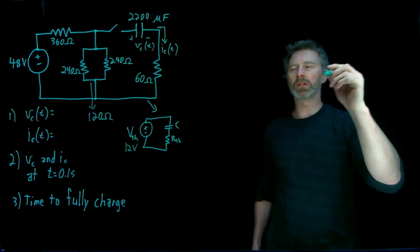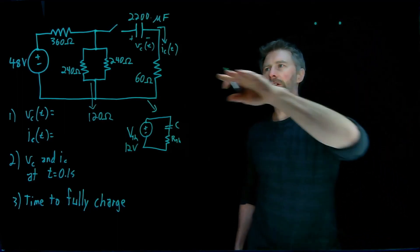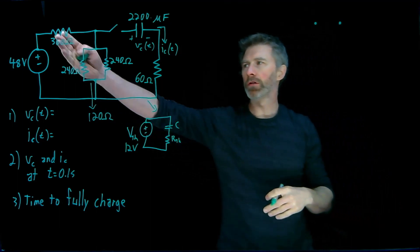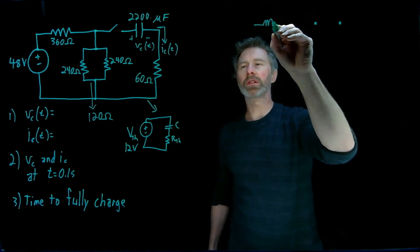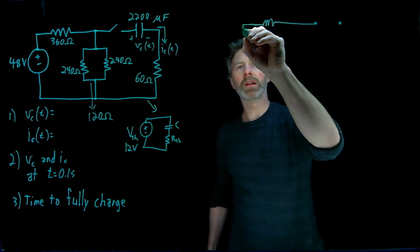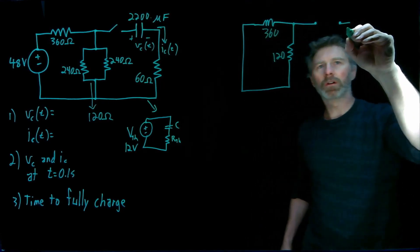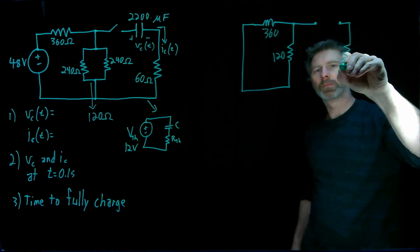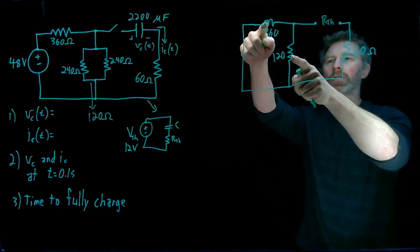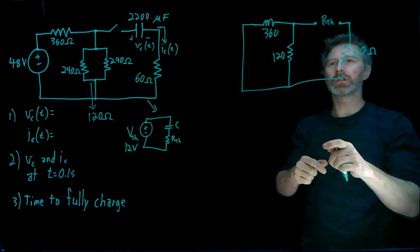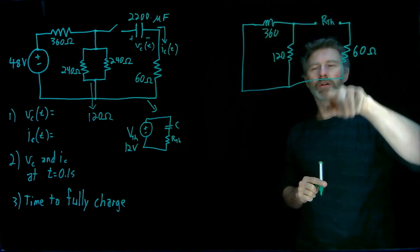Now what about the thevenin resistance? Well, remember for thevenin resistance, I place an open at the point of interest. I'm going to short voltage sources. So I will have this 360 ohm resistor, but it's going to be shorted. I have a 120 ohm resistor, and then over here I've got that 60 ohm. So the resistance between these two points, it's going to be those two in parallel, and then in series with this one. So if I follow a path of current, I'm going to do parallel through those, and then back and going through that 60 ohm.